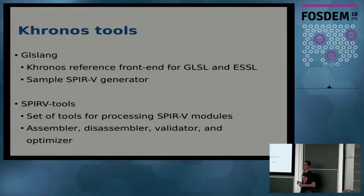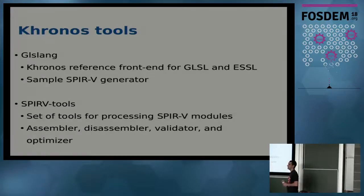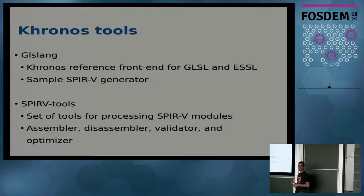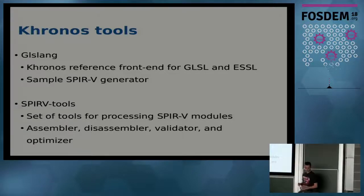Related to this extension and front-end, Khronos also creates reference front-ends. One is glslang, which uses the extension definitions to create SPIR-V binaries based on GLSL. They also maintain SPIR-V tools — tools to manage SPIR-V modules like assembler, disassembler, validator, etc.